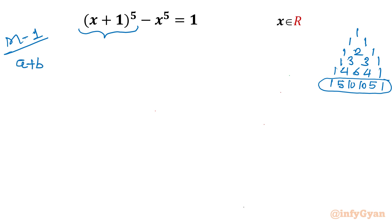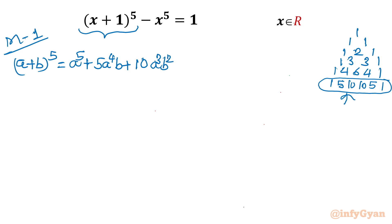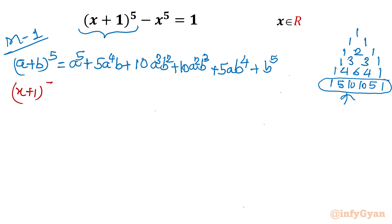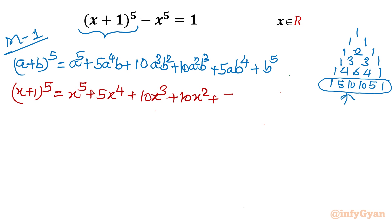Let me write the (a+b)^5 expansion: a^5 + 5a^4·b + 10a³b² + 10a²b³ + 5ab^4 + b^5. The coefficients 1 5 10 10 5 1 match Pascal's triangle. Now applying this with x+1 (setting b=1): (x+1)^5 = x^5 + 5x^4 + 10x³ + 10x² + 5x + 1.